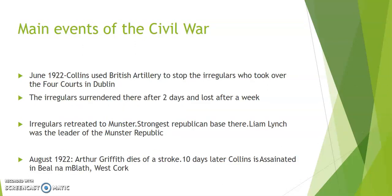On the 28th of June 1922 Collins used artillery borrowed from the British to fire on the Four Courts — this was the start of the Civil War. Within two days the Irregulars in the Four Courts had surrendered. They were defeated in Dublin within a week but retreated to Munster, where their support was strongest, and set up the Munster Republic. Liam Lynch was their chief of staff. The Irregulars used guerrilla warfare tactics against the Free State troops and gradually took control of Munster. On the 12th of August 1922 Arthur Griffith suddenly died of a stroke.